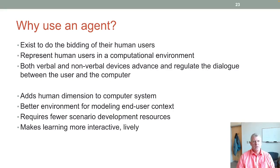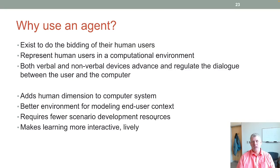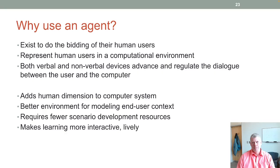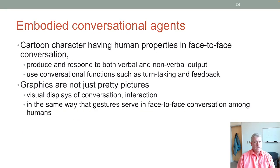Using an agent adds a human dimension to a computer system, requires fewer scenario development resources, and makes learning more interactive and lively. This has applications for children with autism who don't like to make eye contact with humans but may look at a robot and pay more attention to it.